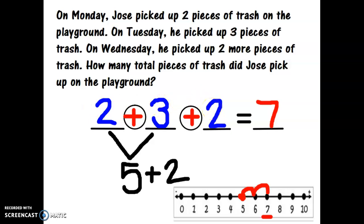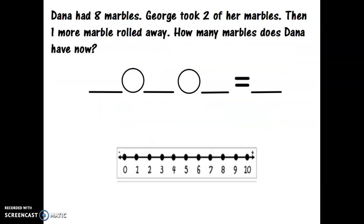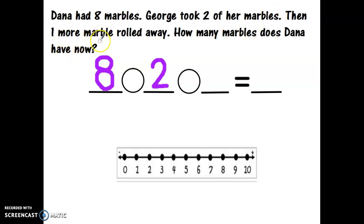Let's do one more problem together. Dana had eight marbles. George took two of her marbles, then one more marble rolled away. How many marbles does Dana have now? Dana starts with eight marbles. George took away two, and then one more marble rolled away.